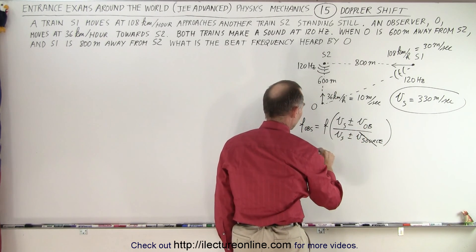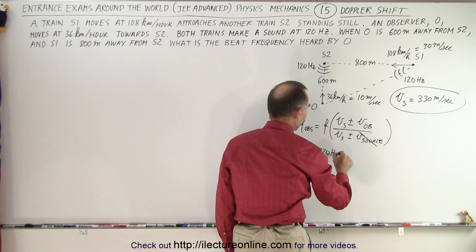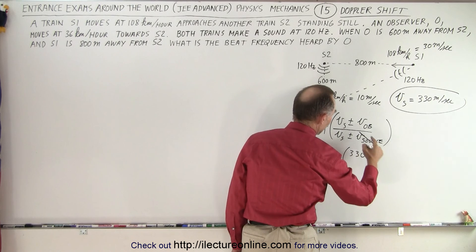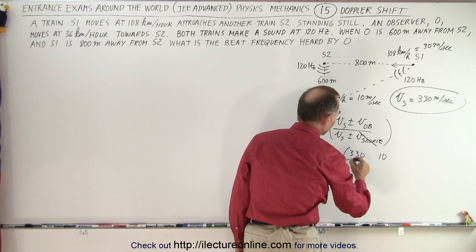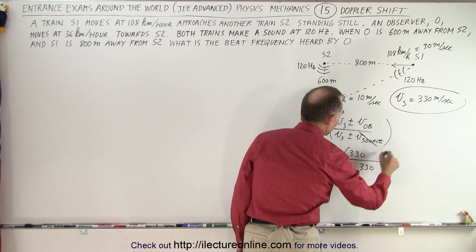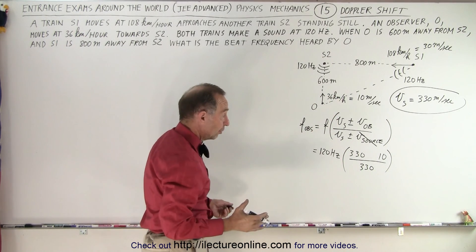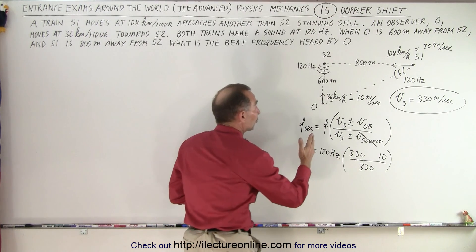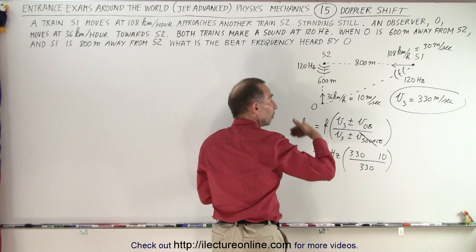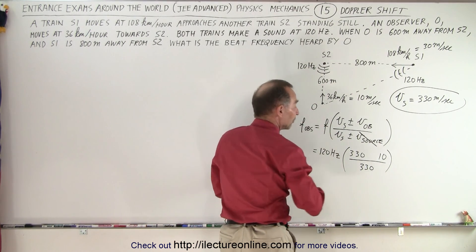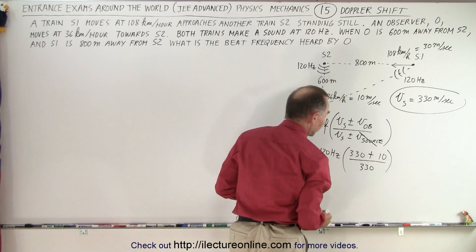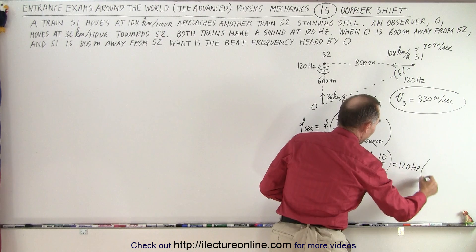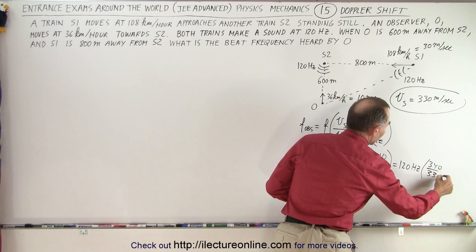Now we can plug in the numbers, so this is equal to 120 hertz times 330 plus or minus the velocity of the observer, which is 10, divided by 330. Now, plus or minus means does the observer hear a higher or lower frequency? Since the observer is approaching the source, the observer should be hearing a higher frequency, so that needs to be a plus. So essentially, this is 120 hertz times 340 over 330.